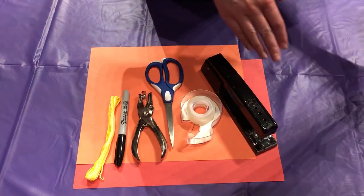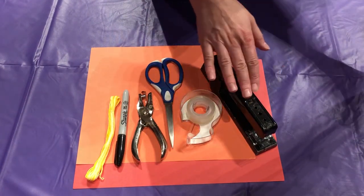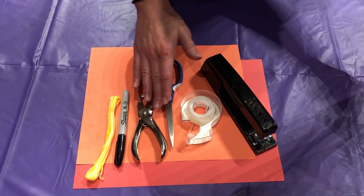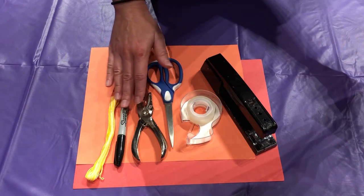All you need are two different colors of construction paper, a stapler, tape, scissors, a hole punch, some sort of marker, and string.